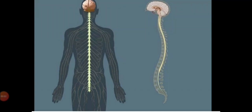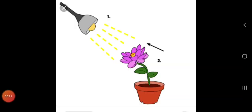The nervous system is the control and coordinating center of the body. In this lesson we are going to study about the components of the nervous system and transmission of nerve impulses. All living organisms respond to stimuli. Changes in the activities of organisms in response to a particular stimulus are called reaction or response.